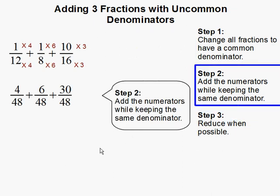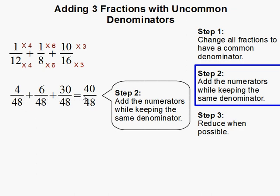Step two: add the numerators while keeping the same denominator. When we have common denominators we can simply add the fractions — the denominator stays the same throughout and we just add the numerators. 4 plus 6 plus 30 gets us 40.